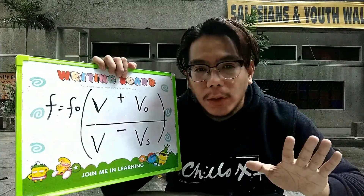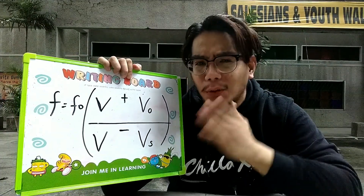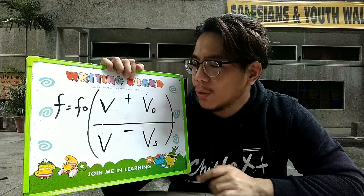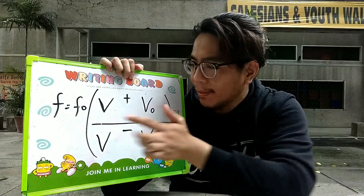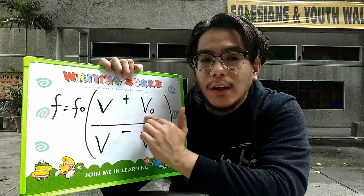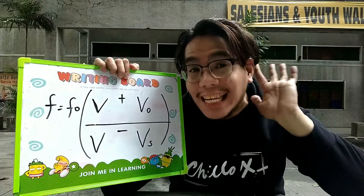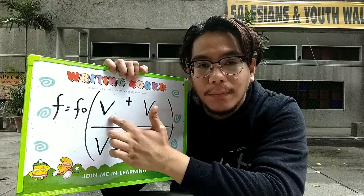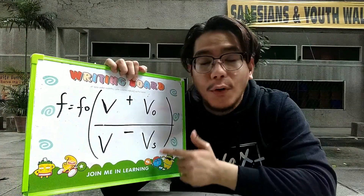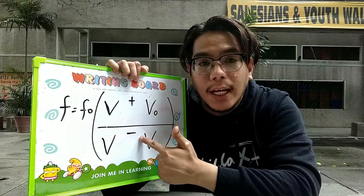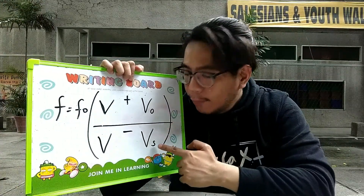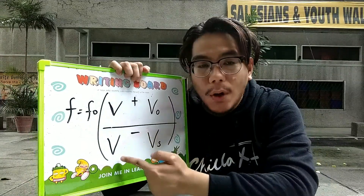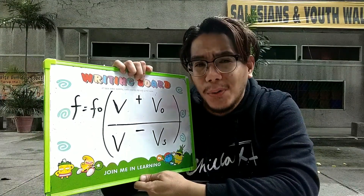Katulad neto, itong formula na ito symbolizes a certain situation. The velocity of the observer or the listener is going towards the sound. And for the source, kasi upper sign din siya kanina, the velocity of the source is going towards din.